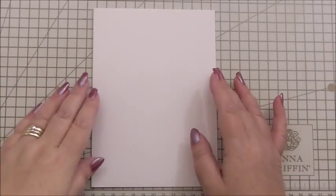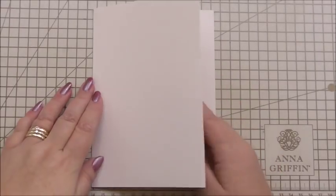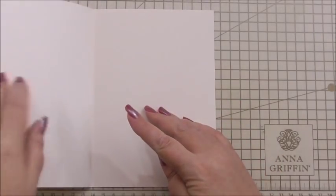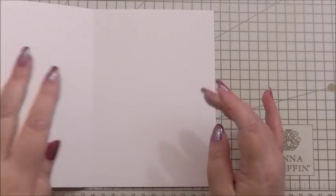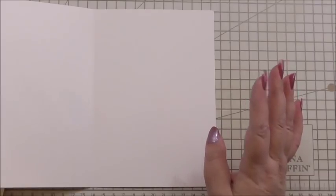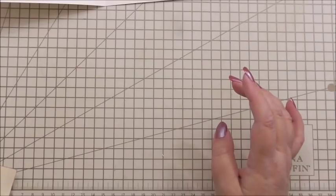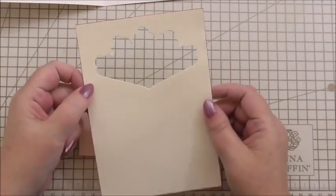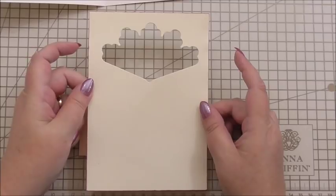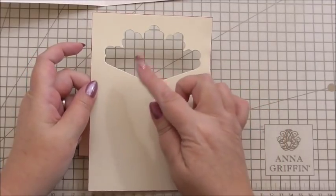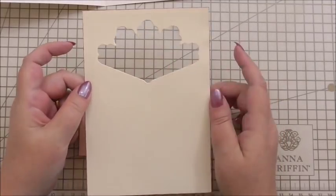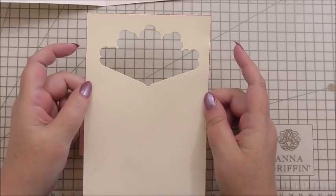Now this card is going to be a really pretty card. When we create the inside, we're just going to move the card out of the way for a minute. I've cut a rectangle to fit the inside of the card. I've also die-cut one of the mini fans out of the top of the rectangle.